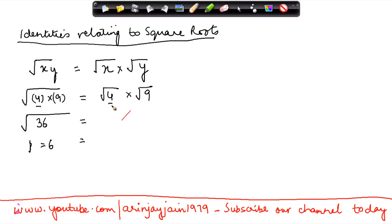Now we know that the square root of 4 is 2 and square root of 9 is 3. So 2 times 3 gives me 6. So therefore, this rule that square root of x y is equal to square root of x into y holds good.